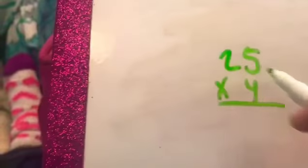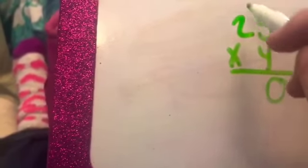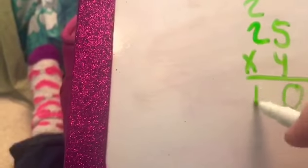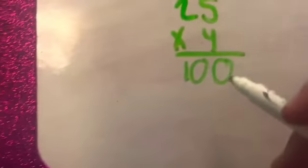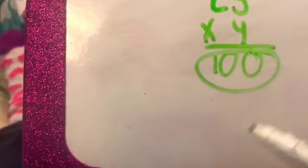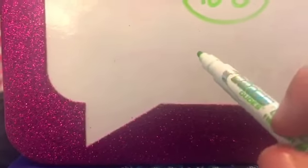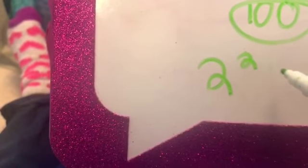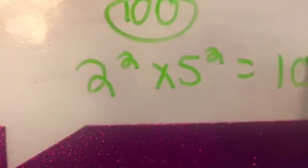Okay, so 5 times 4 is 20. 2 times 4 is 8, plus 2 is 10. So, our answer is 100. That means 2 to the second power times 5 to the second power equals 100.